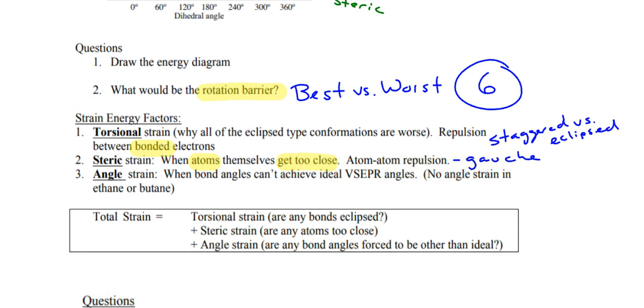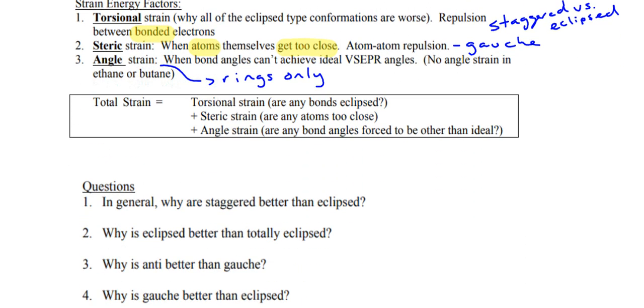This one, angle strain, is only with rings. So right now with Newman projections, we won't worry about that nearly as much. So in the box here it says total strain: it's torsional strain, any bonds eclipsed; steric strain, any atoms too close; and angle strain, again, that would be a ring.